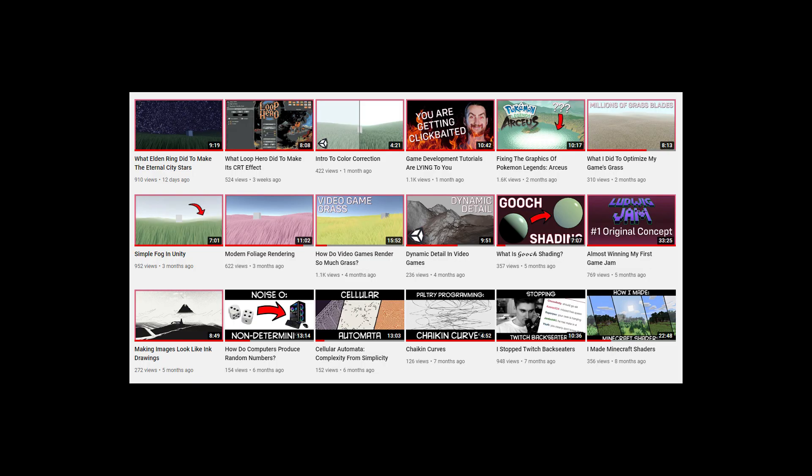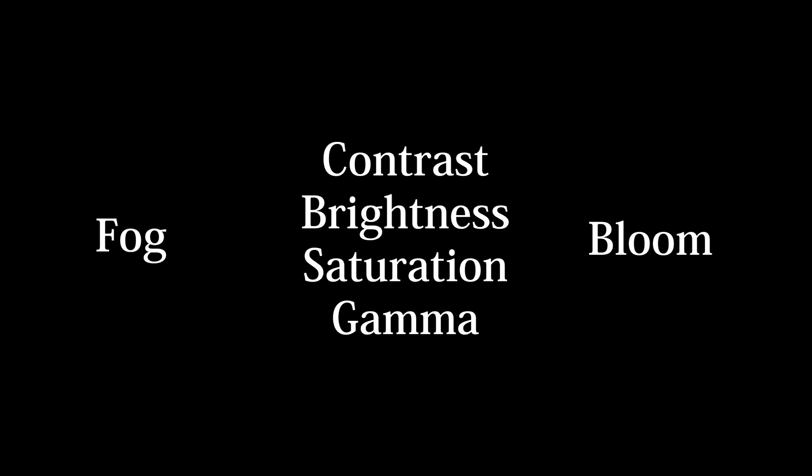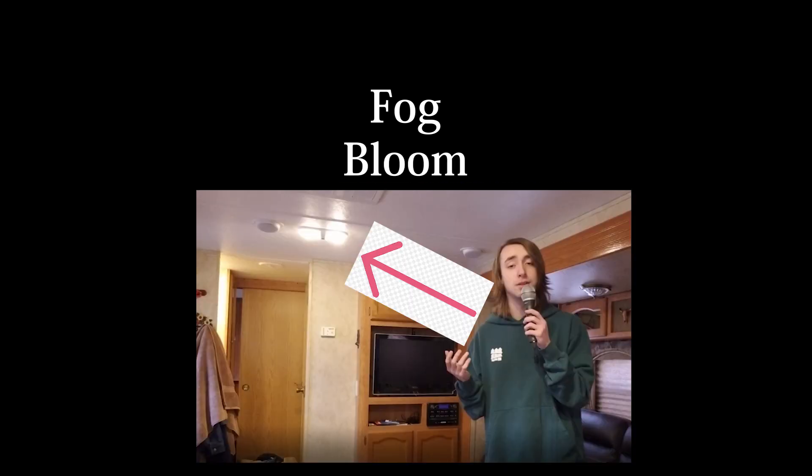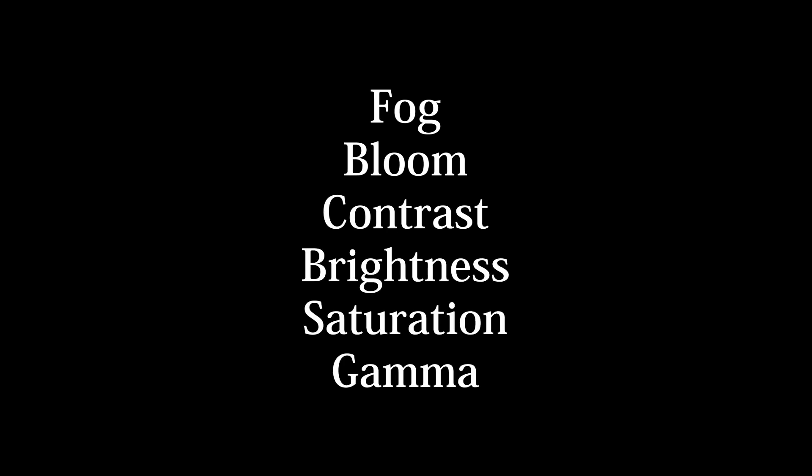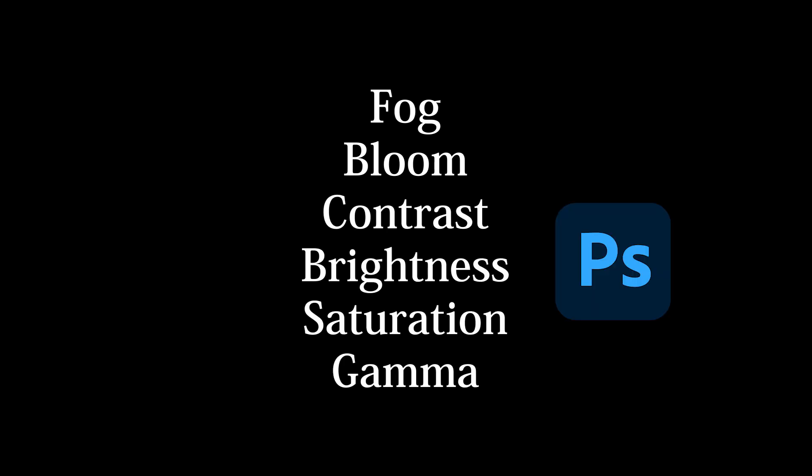So far, out of all my videos, I've talked about fog, color correction, and bloom. To order these effects properly: fog comes first since it simulates a part of the environment, bloom comes next since it simulates the effect of light overwhelming a camera lens, and lastly comes color correction, because that's what you would do in Photoshop.